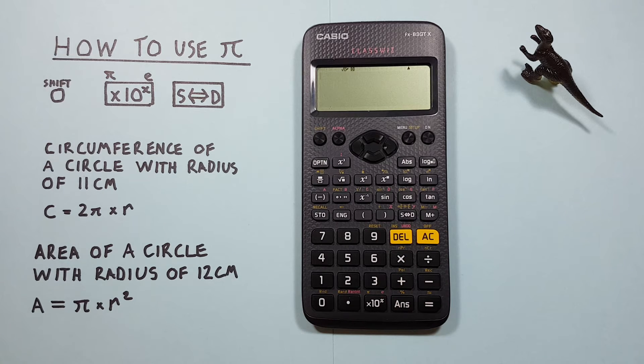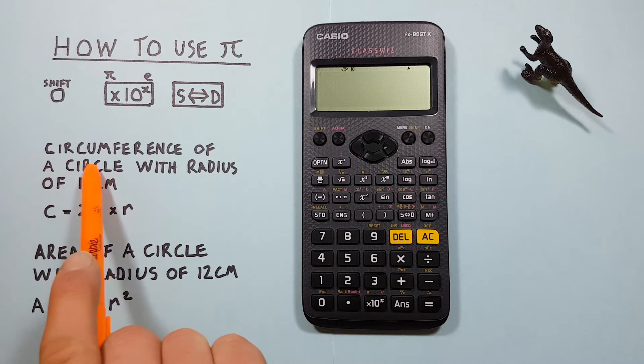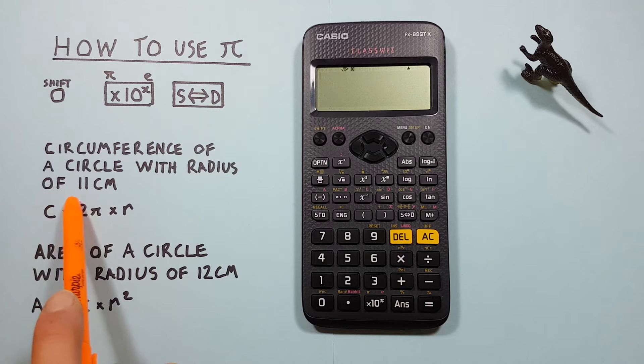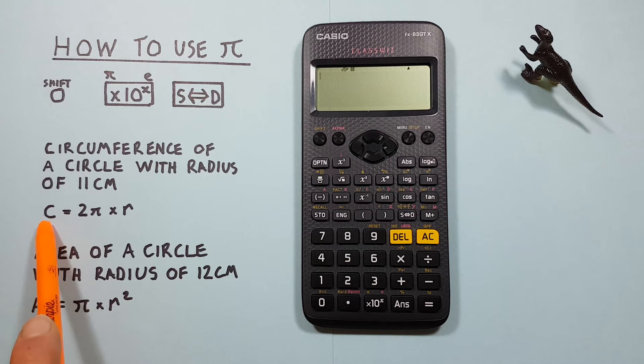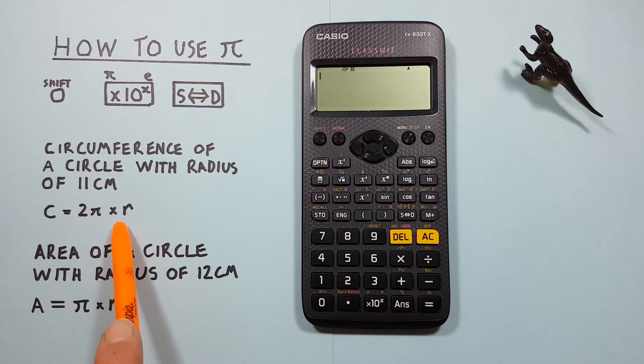The PI function is helpful with a lot of calculations. For example, if we want to calculate with circles. Let's say we wanted to find the circumference of a circle with a radius of 11 centimeters. We can use this formula here. C for circumference is equal to 2 PI times R.